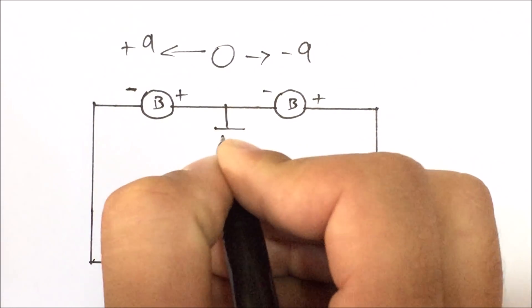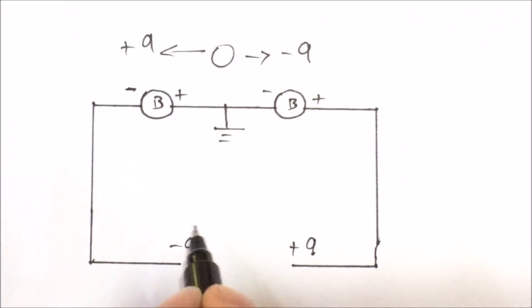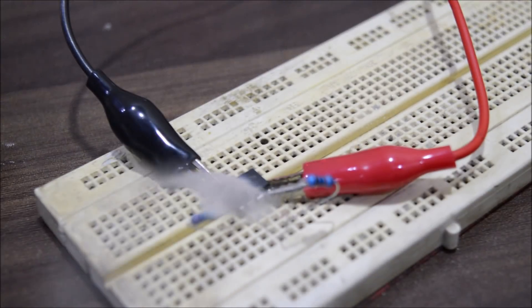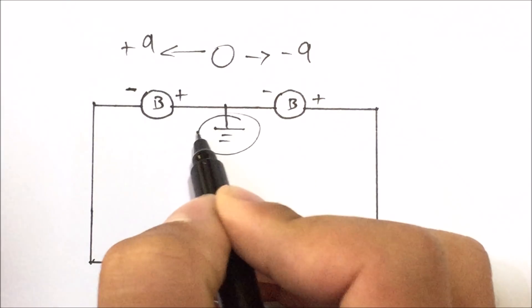Now all the ground potentials of your circuit will not connect to the negative 9V potential. If you do so, you might be able to hear something like this. So be sure to connect it to the ground.